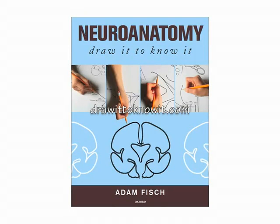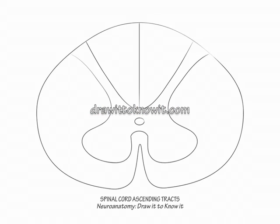Here we will draw a cross-section of the ascending sensory pathways of the spinal cord, starting first with the posterior column pathway, which carries large sensory fibers. Begin with a spinal cord cross-section that includes the gray matter horns, central canal, and posterior median septum.